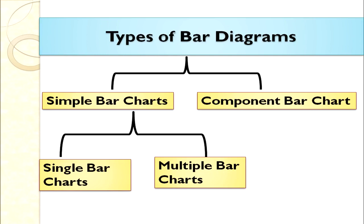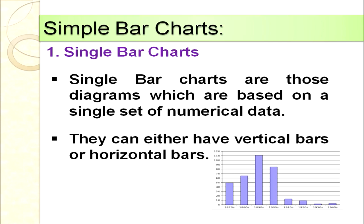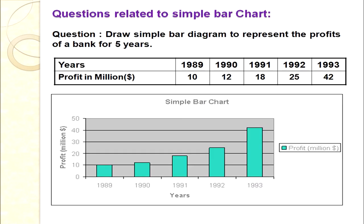There are mainly two different types of bar diagrams: simple bar charts and component bar charts. For simple bar charts, we can also discuss single bar charts, where a single set of data is given, and multiple bar charts, where two or more sets of data are given. A simple bar chart is based on a single set of numerical data. The bars can be vertical or horizontal, but we will always use vertical bars.